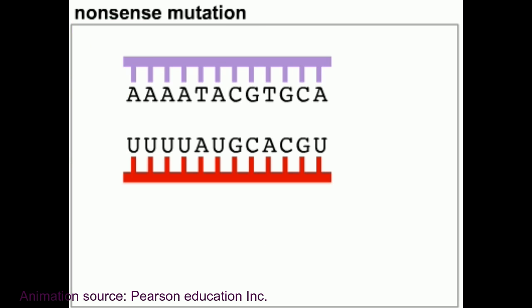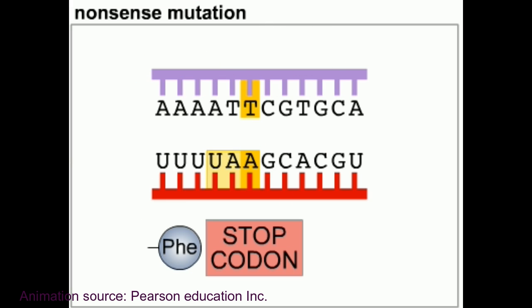The third type is nonsense. If the base substitution causes a codon to change from one coding for an amino acid to a stop codon, it is a nonsense mutation. In general, nonsense mutations are harmful since they lead to the premature termination of protein synthesis.